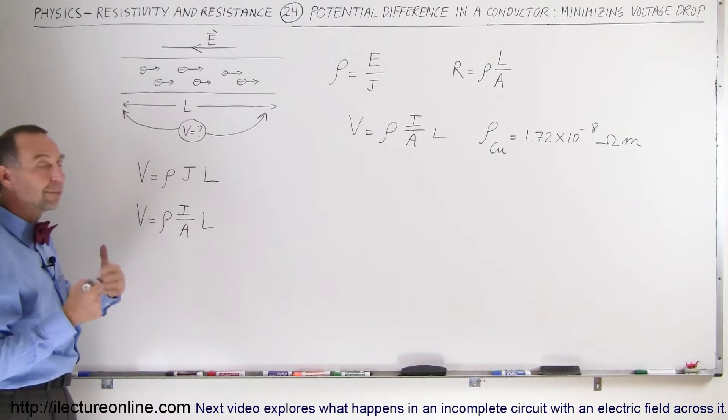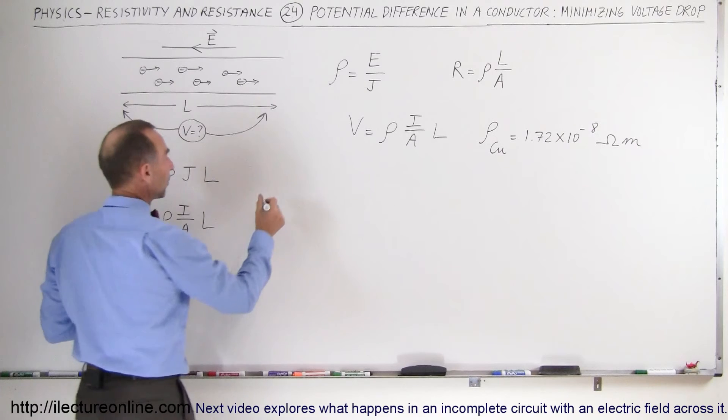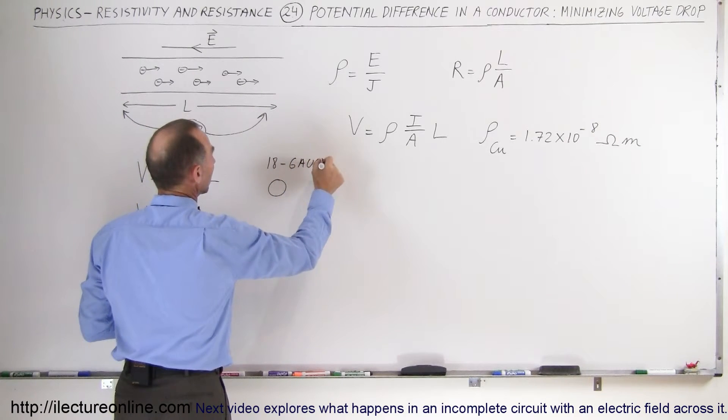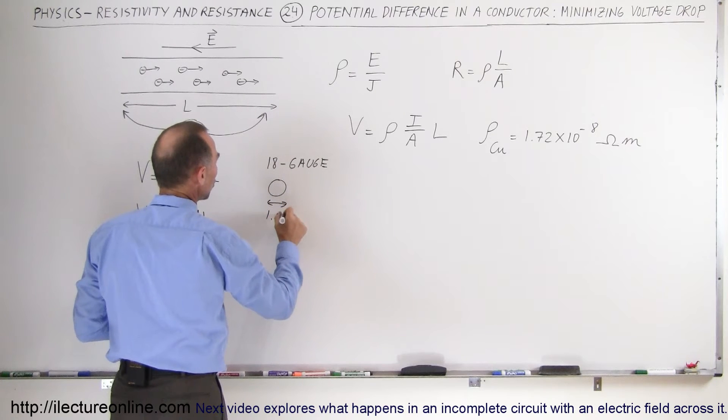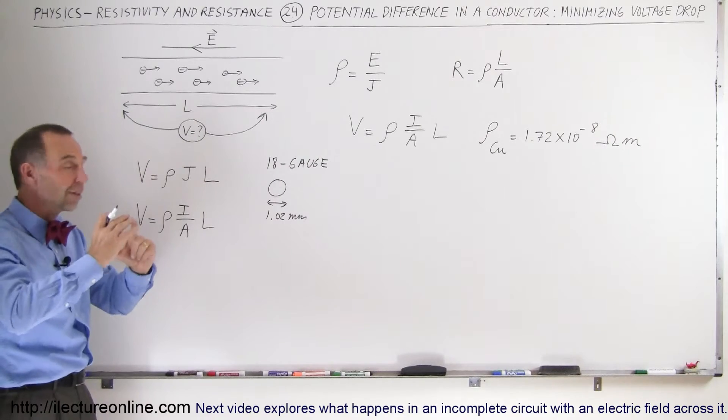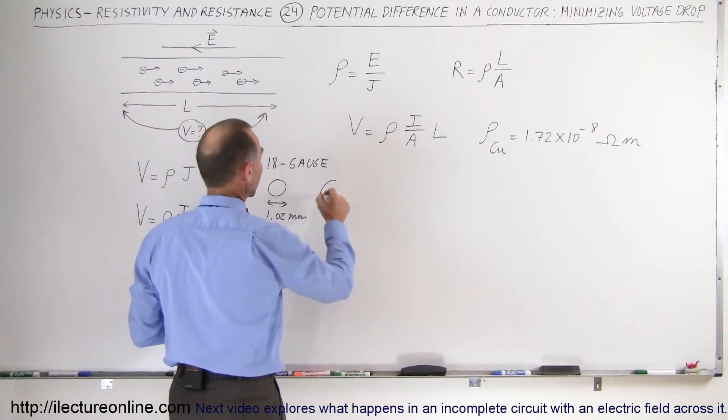So what we can do here is get a bigger gauge wire. For example, if we have 18-gauge wire, the diameter of the wire is 1.02 mm. If we have a lower gauge, we increase the diameter of the wire. The larger you make the diameter of the wire, the greater the cross-sectional area.